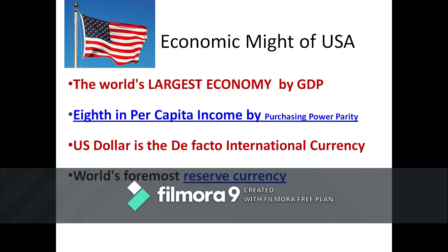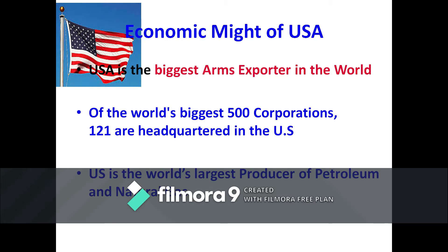No wonder the world's foremost reserve currency is the dollar even today. Moreover, if we rank the world's biggest 500 corporations, 121 have their headquarters in the United States even today. It is true that tax havens are growing all over the world. Nonetheless, the US has maintained 121 companies with headquarters in their country. And lastly, the US is the world's largest producer of petroleum and natural gas.